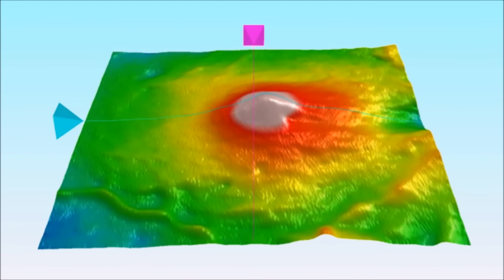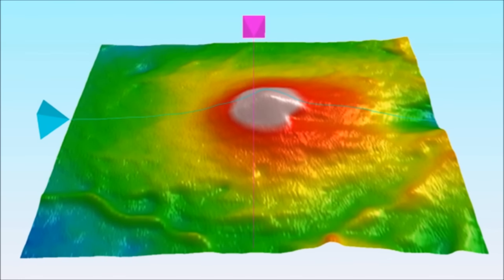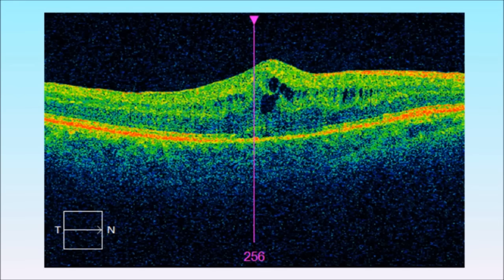This 3D scan shows a blister of interretinal fluid that has occurred following cataract surgery. The location of the fluid is shown clearly on the 2D OCT section. We treated this condition with steroid eye drops until a normal retinal profile returned.